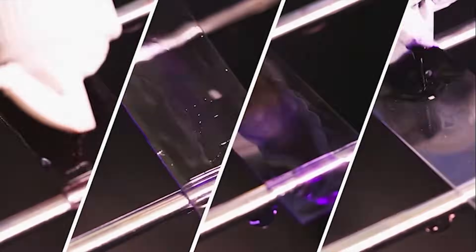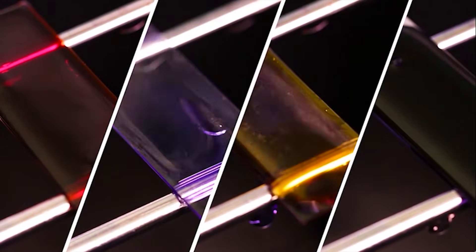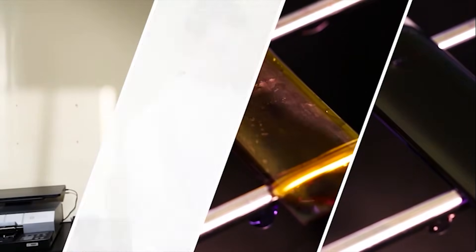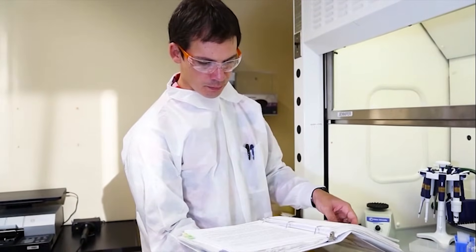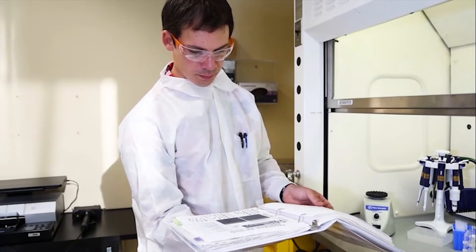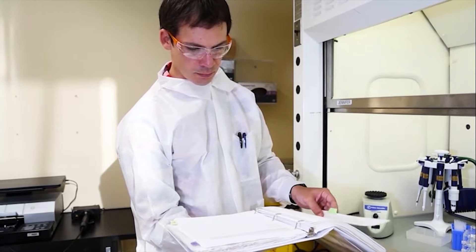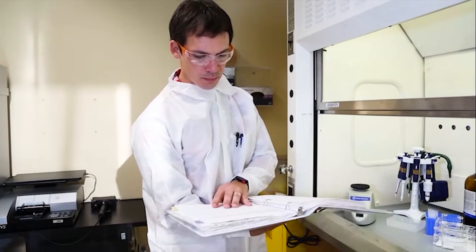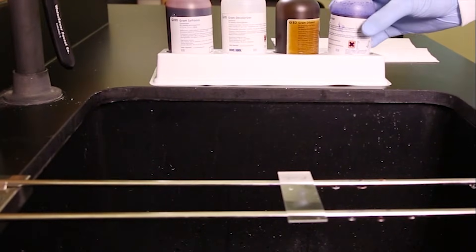There are variations of the Gram stain procedure regarding the timing and reagents, but the basic steps are the same. You will need to follow your institution's procedures. For this Gram stain demonstration, we are going to follow the American Society of Microbiology's Manual of Clinical Microbiology Procedures, 10th Edition. Position your slide rack over the sink and place the fixed slide on the slide rack.